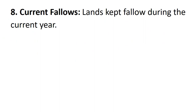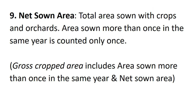The eighth category is current fallow. Current fallow means the fallow lands kept fallow during the current year. The current fallow lands represent the cropped area kept fallow during the current year — for example, if any sown area is not cropped in the same year, it may be treated as current fallow.